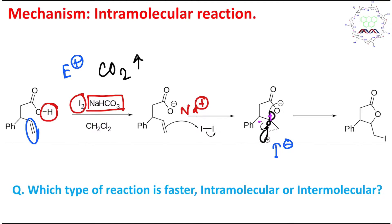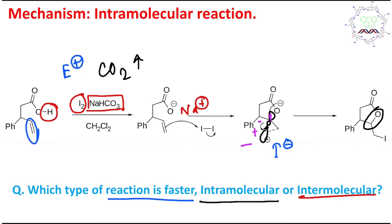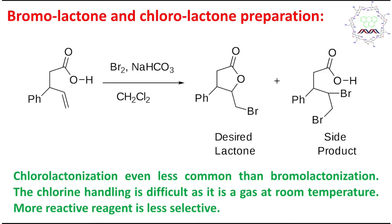The bridged iodonium intermediate can be opened either by the counter iodide or by the oxygen of the neighboring carboxylate group. The oxygen has the proper conformational orientation with respect to the C–I bond's sigma* orbital, allowing it to overlap and form the C–O bond. This intramolecular reaction is preferred over intermolecular reaction both thermodynamically and kinetically. The result is one C–O bond and one C–I bond, hence iodolactonization.